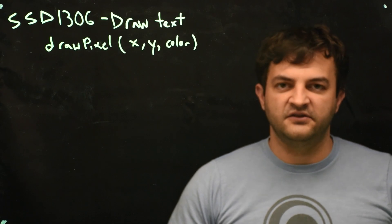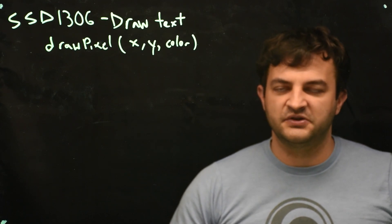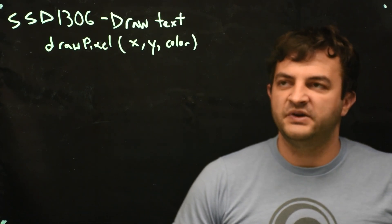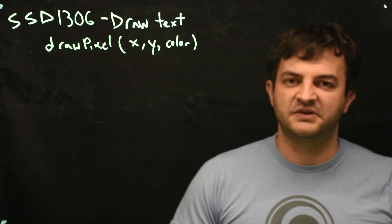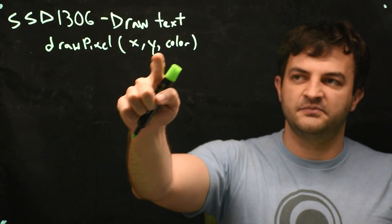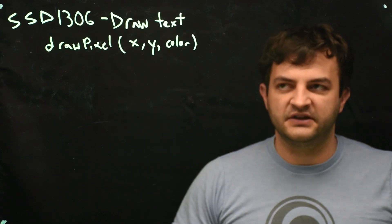It doesn't know what letters are so we can't tell it print the letter A. We have to say oh well here's what A is. A is a bunch of pixels that are on and off in a certain pattern that we'll call bitmap. It's really an image.